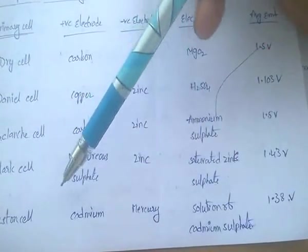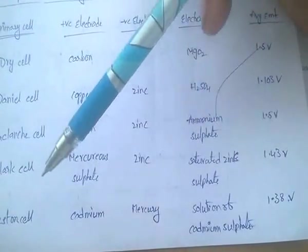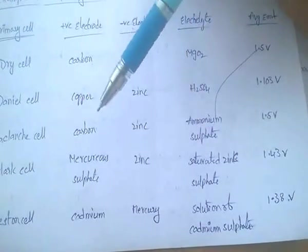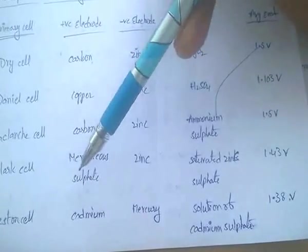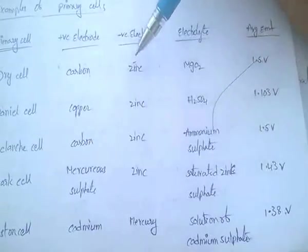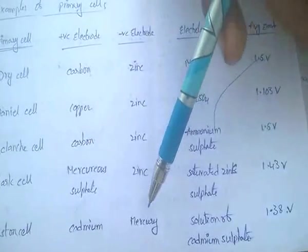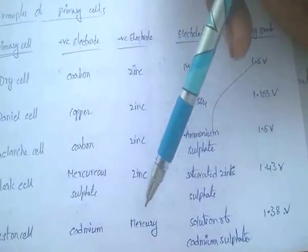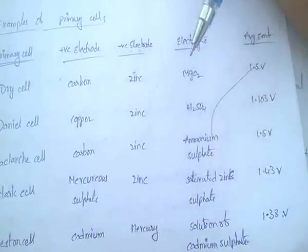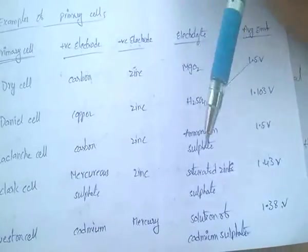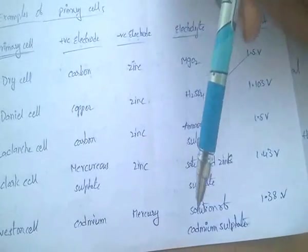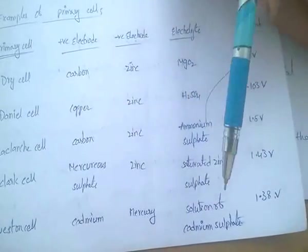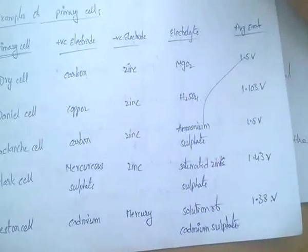The Weston cell: the positive electrode is cadmium, the negative electrode is mercury, and the electrolyte is a solution of cadmium sulfate.